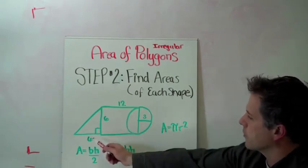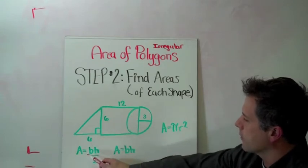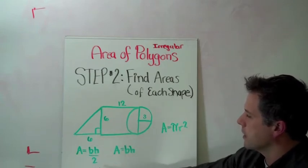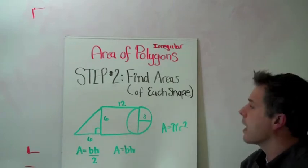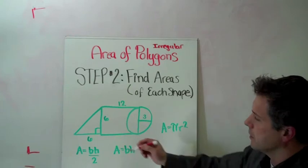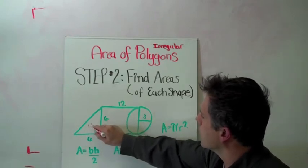First of all we have a triangle here. And the triangle, our area for triangle is base times height divided by 2. Well the base is 6, the height is 6. So 6 times 6 is 36. Half of 36 is 18. So I'm just going to put 18 right in there.